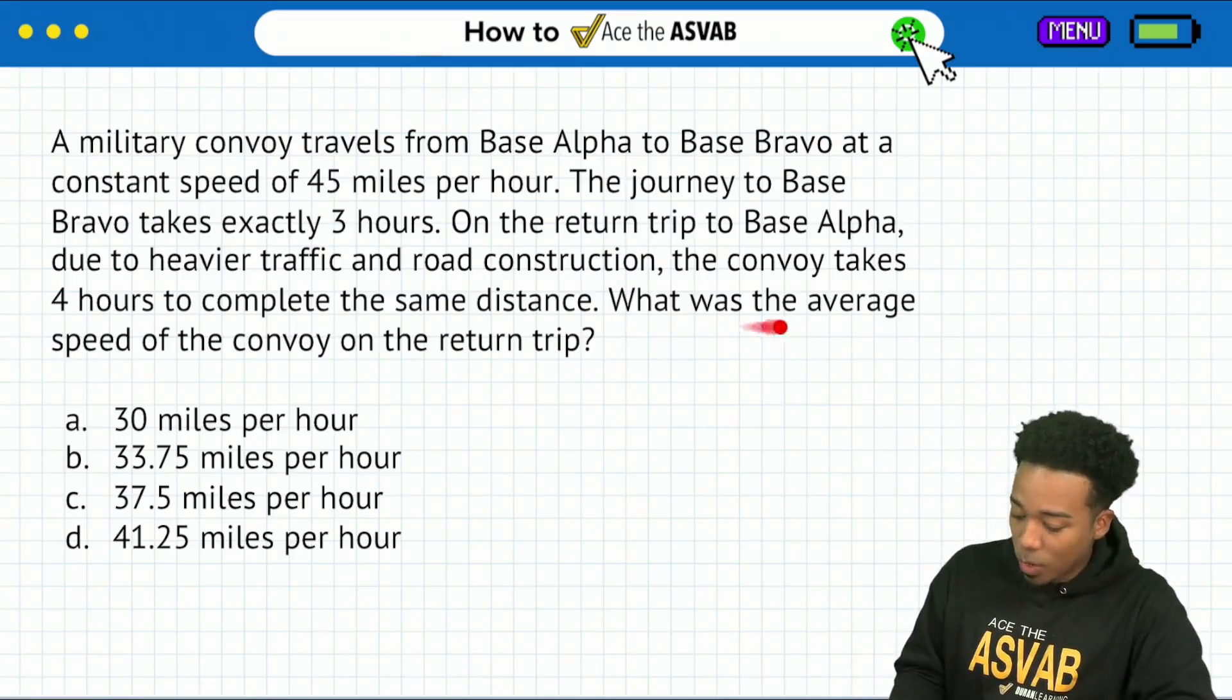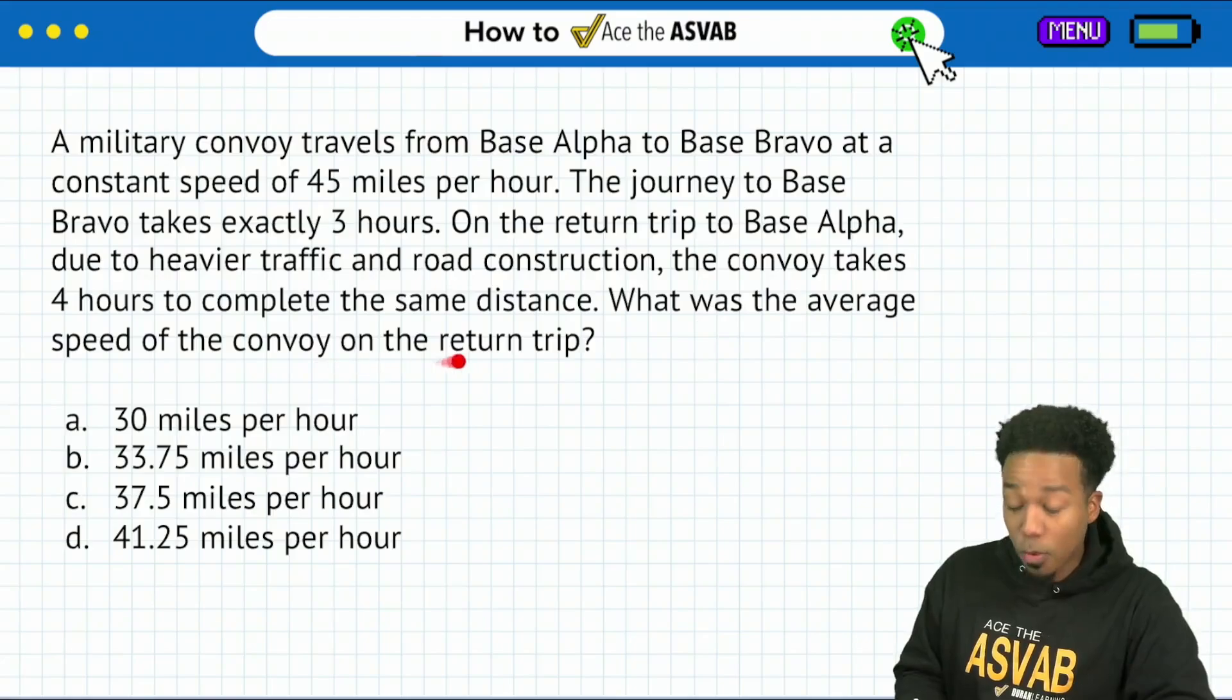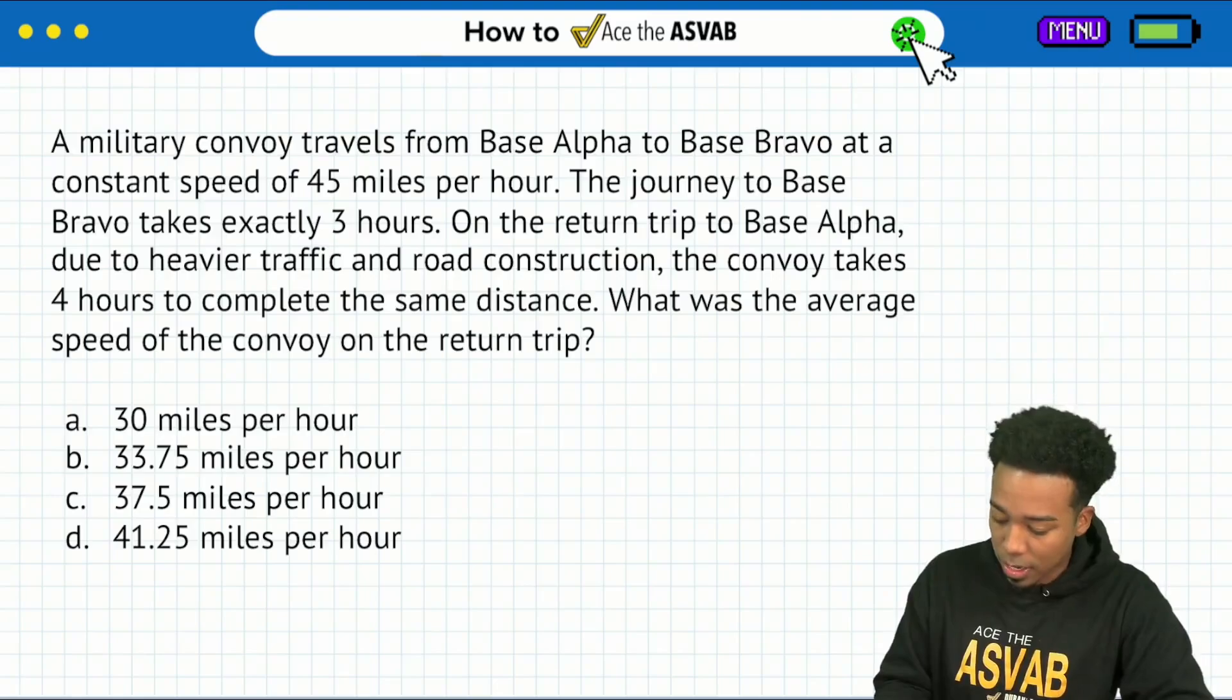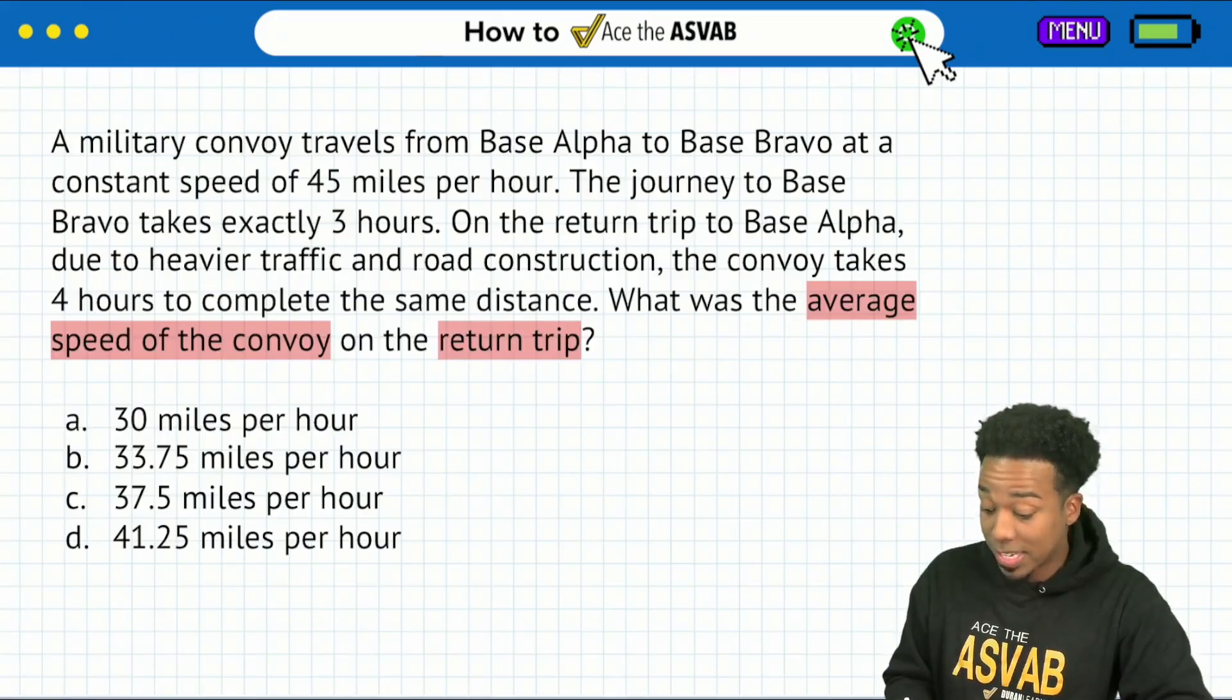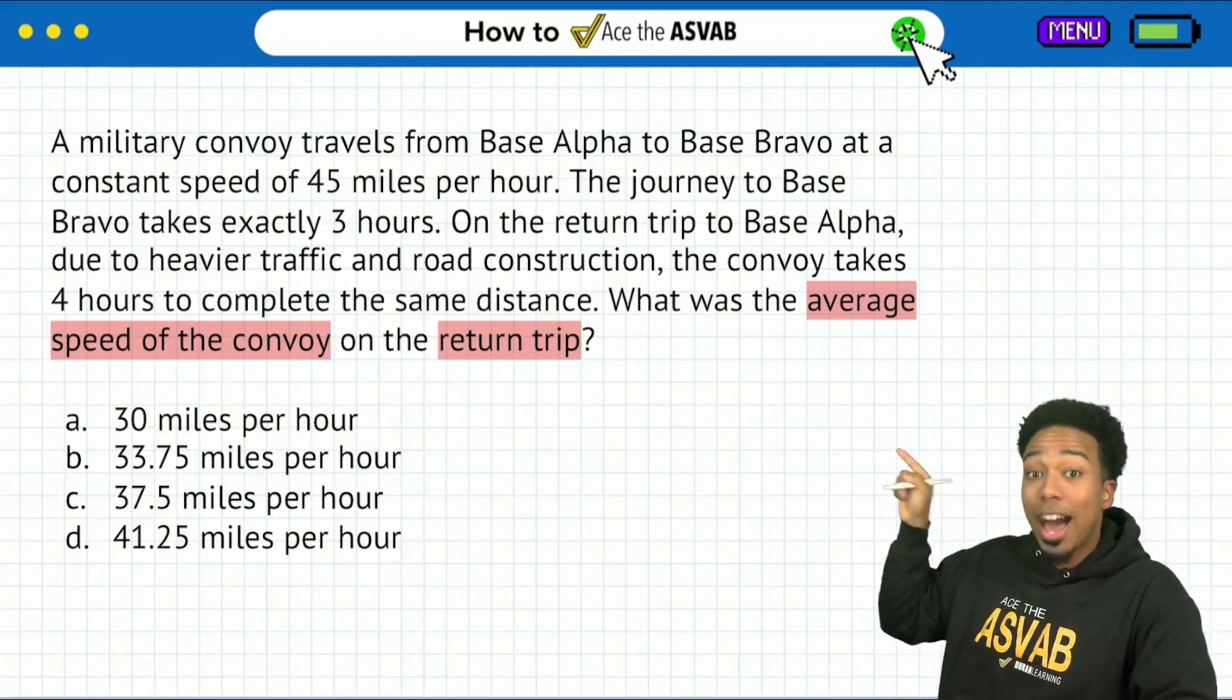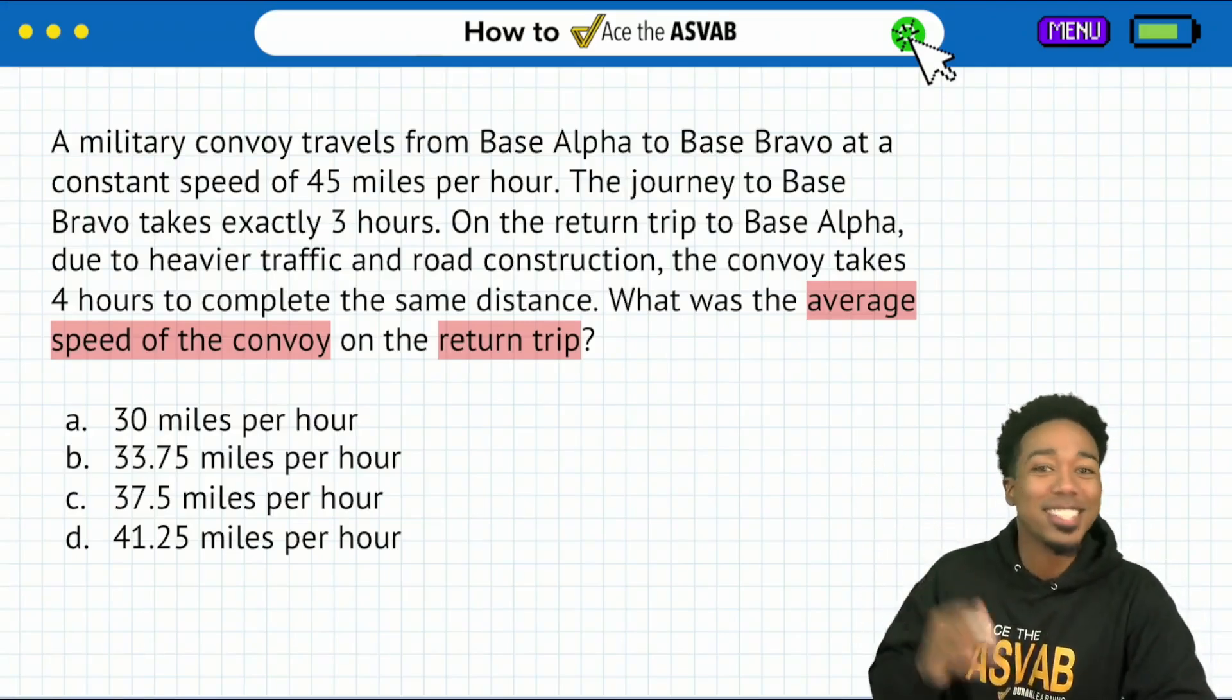So let's get to it. First things first, right over here. What was the average speed of the convoy on the return trip? Pay very close attention to the wording there. It's always important here. What was the average speed of the convoy, but more specifically, on the return trip? Right there. Highlight that, circle that, whatever it is that you got to do.